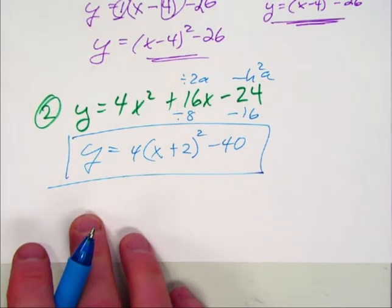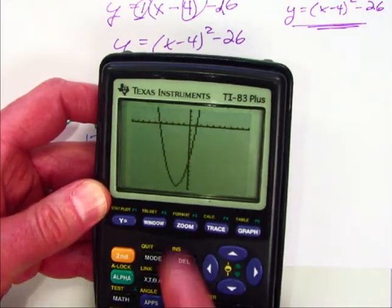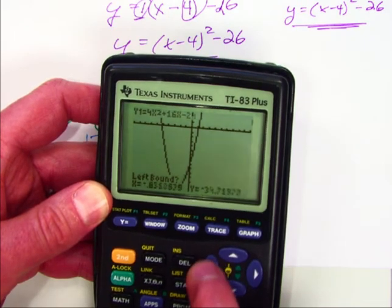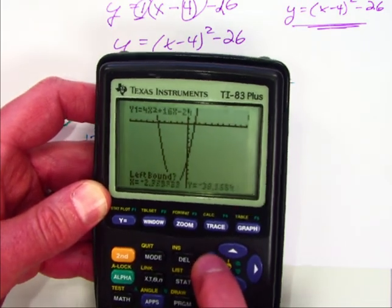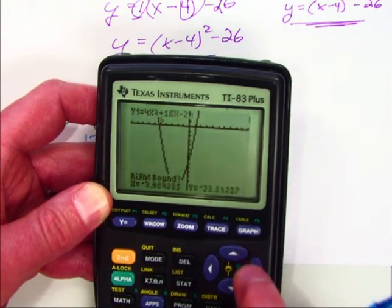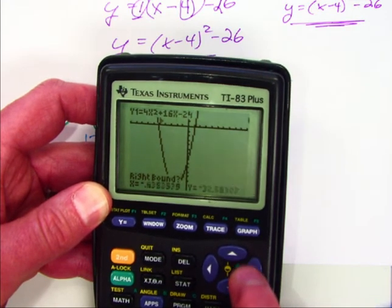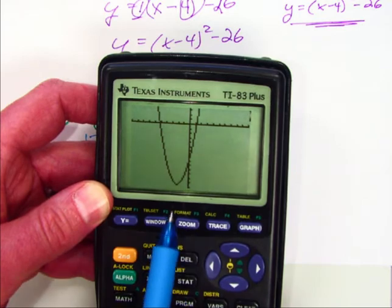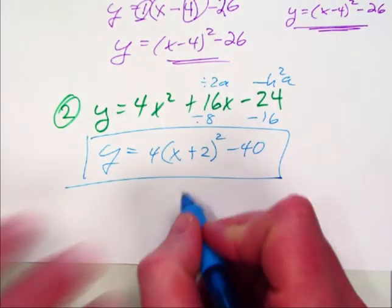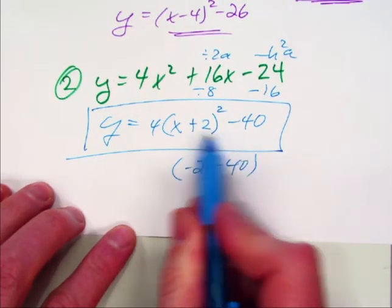Now, if I had this in my calculator, I could do the same thing. I could type it in, push graph, look at the graph, I could do 2nd calc, go down, hit the minimum, do a left boundary, by the way, that's over here on the left side. You better know your difference between your left and your right. So I got it to show up over there, enter, and then I need to get it to show up somewhere on the right hand side, as long as the blinker or the cursor is over here. Push enter, push enter to get by the guess, and now it's blinking at negative 2 comma negative 40. So the vertex was at negative 2 comma negative 40 if I started with that, which would then give me the exact same equation.